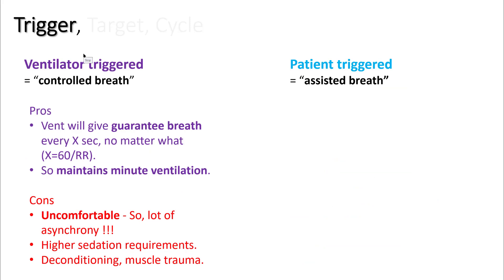The advantage of ventilator-triggered breaths is that you get a guaranteed breath and maintain minute ventilation. However, this can be very uncomfortable and can result in a lot of asynchrony. If you set the respiratory rate at 20, the patient gets inspiratory breaths every 3 seconds. If the patient's intrinsic drive is 30 times a minute, there will be periods where the ventilator wants to give inspiration while the patient wants to breathe out. That results in a lot of patient-ventilator asynchrony, muscle trauma, higher sedation requirement, and can kill the patient's respiratory drive, leading to further deconditioning of the muscles.